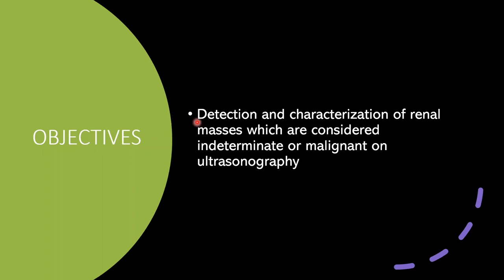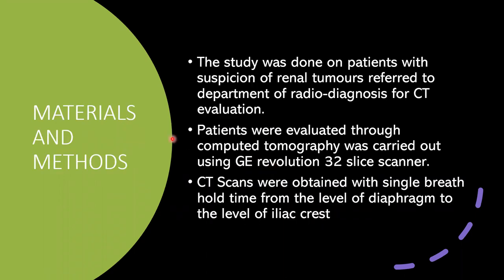Objectives of the study: detection and characterization of renal masses which are considered indeterminate or malignant on ultrasonography. The study was done on patients with suspicion of renal tumors referred to the Department of Radiodiagnosis. Patients were evaluated using CT with a GE Revolution 32-slice scanner, obtained with a single breath-hold from the level of the diaphragm to the level of the iliac crest.